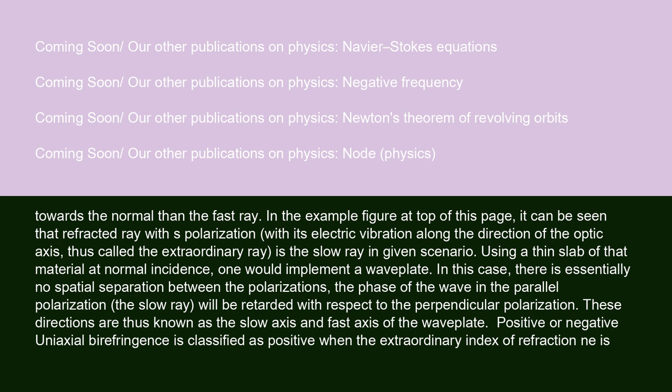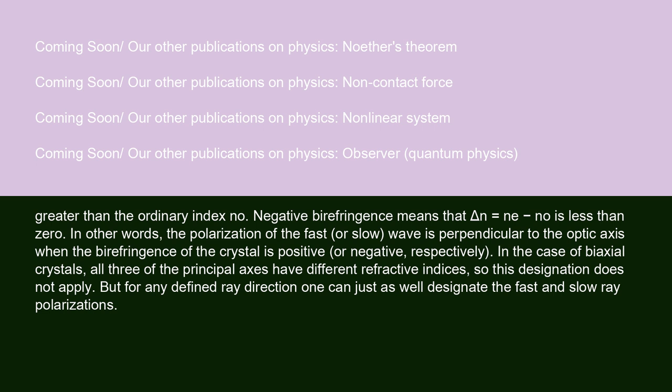Birefringence is classified as positive when the extraordinary index of refraction n-e is greater than the ordinary index n-o. Negative birefringence means that delta-n equals n-e minus n-o is less than zero. In other words, the polarization of the fast or slow wave is perpendicular to the optic axis when the birefringence of the crystal is positive or negative, respectively. In the case of biaxial crystals, all three of the principal axes have different refractive indices, so this designation does not apply. But for any defined ray direction, one can just as well designate the fast and slow ray polarizations.